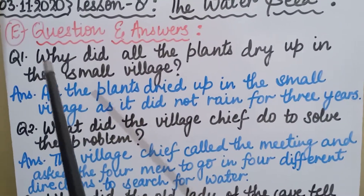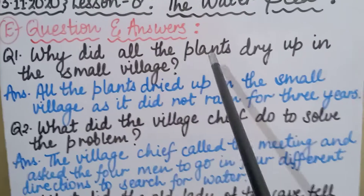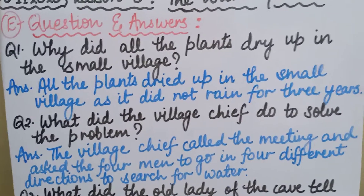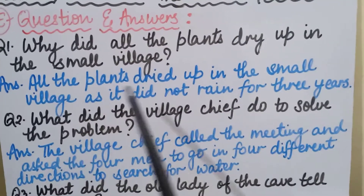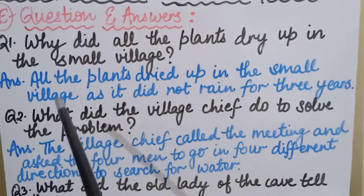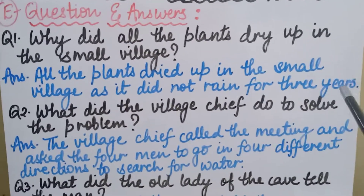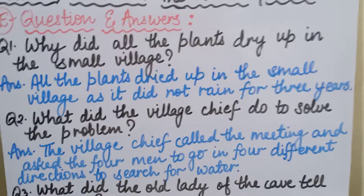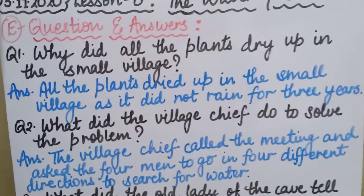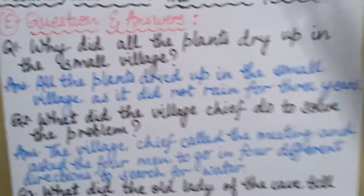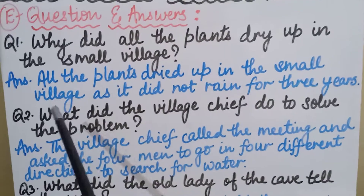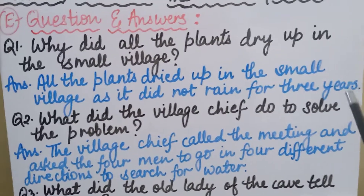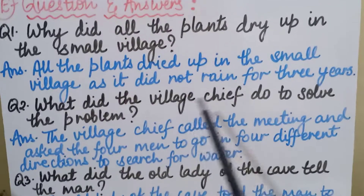First question: Why did all the plants dry up in the small village? The answer is: all the plants dried up in the small village as it did not rain for 3 years. There was a great shortage of water in the village. I hope the first answer is clear to you all.